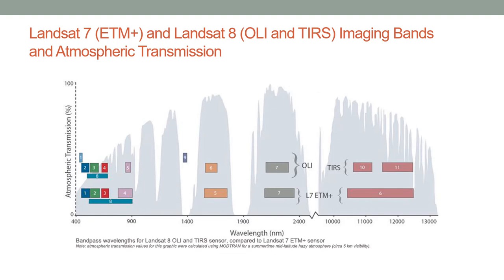This graph shows the transatmospheric transmission of electromagnetic radiation as a function of wavelength, illustrating the atmospheric windows available. Satellite imaging bands are placed within these atmospheric windows. You can visualize the Landsat 7 bands from the Enhanced Thematic Mapper Plus or ETM Plus instrument: bands 1, 2, 3 are blue, green, and red; band 4 is near-infrared; band 5 is middle-infrared; band 7 is middle-infrared; and band 6 is far thermal-infrared. Landsat 8 has slightly different bands using the Operational Land Imager sensor.